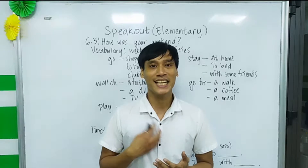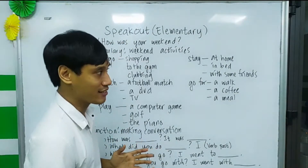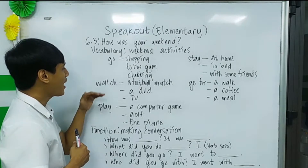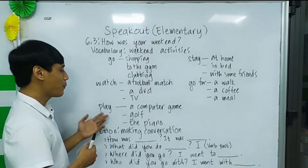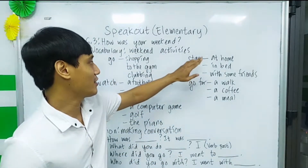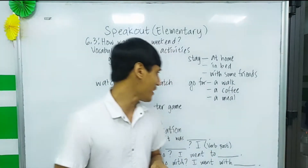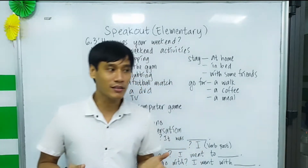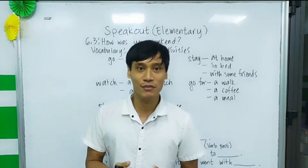Try to make a sentence out of each one, like we practiced in our previous lesson. For example: 'I went to the gym yesterday.' Watch — 'I watched TV the whole day last Sunday.' Play — 'I played the piano when I arrived home.' Stay — 'I stayed in bed after I worked because I was so tired.' Go for — 'I went for a walk at 6 p.m.' Try to make your own sentences.